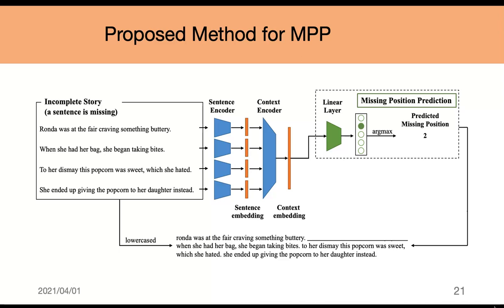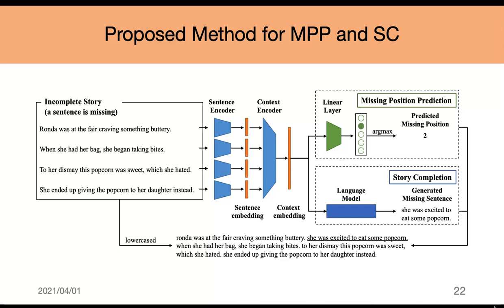Given a false-sentence incomplete story, the model processes each sentence through a sentence encoder to get sentence embeddings. These sentence embeddings are fed into a context encoder to get a context embedding. The context embedding is fed into a linear layer, and classification is done for missing portion prediction. Moreover, this method can be easily expanded for story completion: the same context embedding is fed into a language model, which generates the missing sentence. Outputs from the two modules and the given incomplete story are then combined.